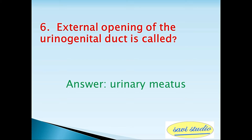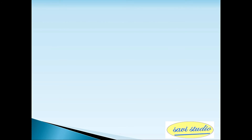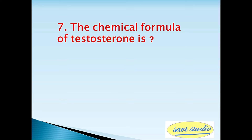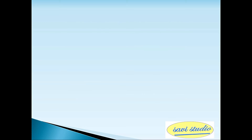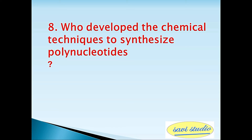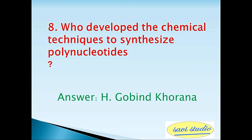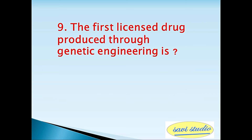Seventh question: The chemical formula of testosterone is — answer: C19H28O2. Eighth question: Who developed the chemical techniques to synthesize polynucleotides? Answer: H. Gobind Khorana. Ninth question: The first licensed drug produced through genetic engineering is — answer: human insulin.